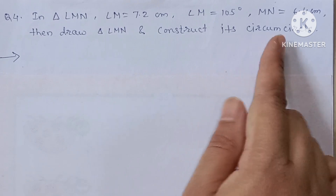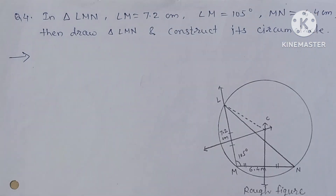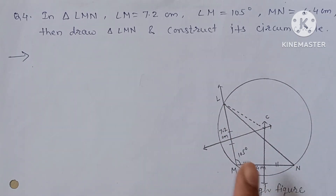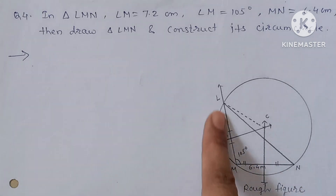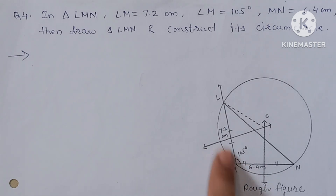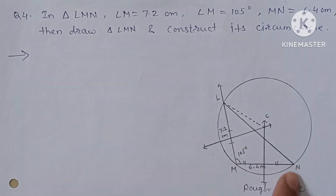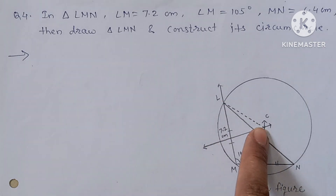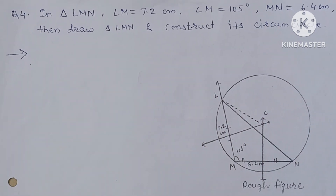First, draw the rough figure. From the given information, this is your rough figure. The base is 6.4, this angle is 105 degrees, and this distance is 7.2. Join L and N. After that, joint L and N — this is your radius and you can draw the circle.